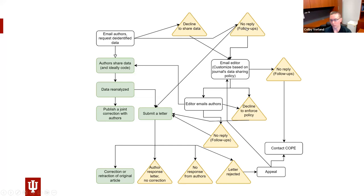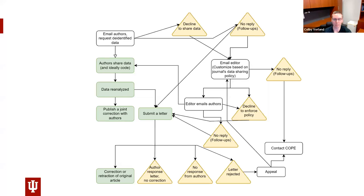If we get stuck and can't get raw data, we'll often just submit a letter describing our concerns but noting that we couldn't obtain raw data to verify through reanalysis. A lot of the time when we email authors and they don't reply, we'll send lots of follow-ups and try to involve the editor. Sometimes involving COPE helps to get things moving again, even though COPE can't actually enforce anything — sometimes just an email from COPE to a journal may prompt them to reply. This process is really hard to standardize, which I think is itself an interesting thing to study.